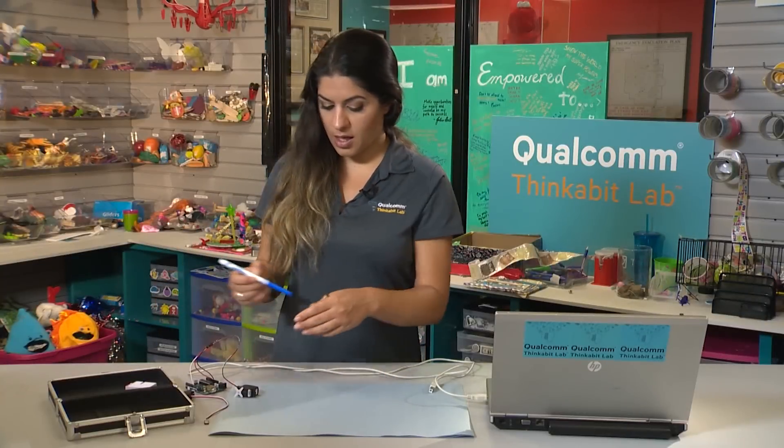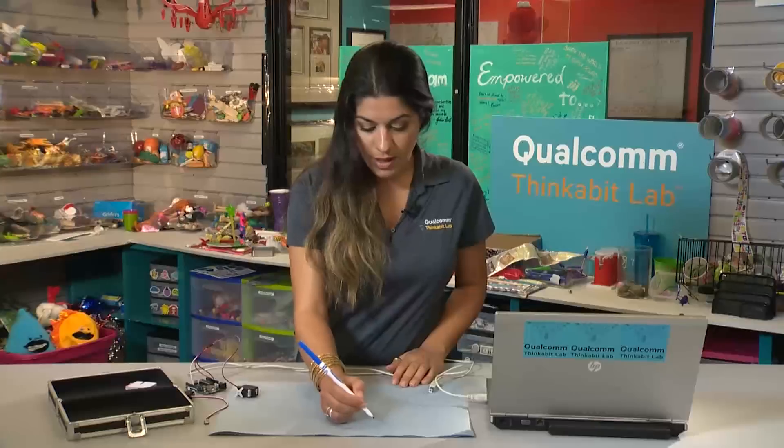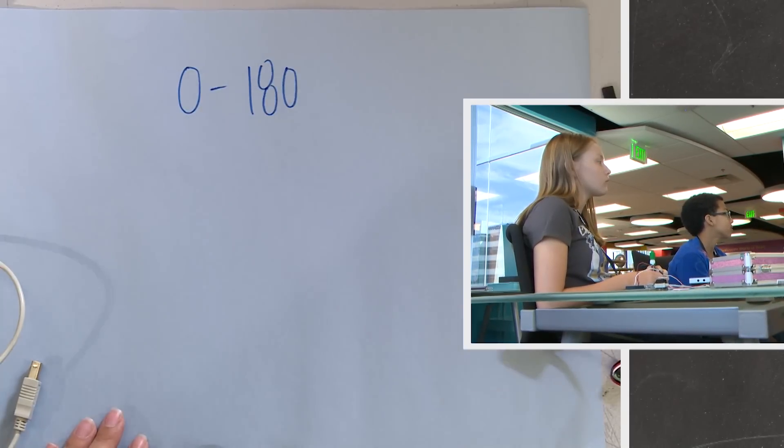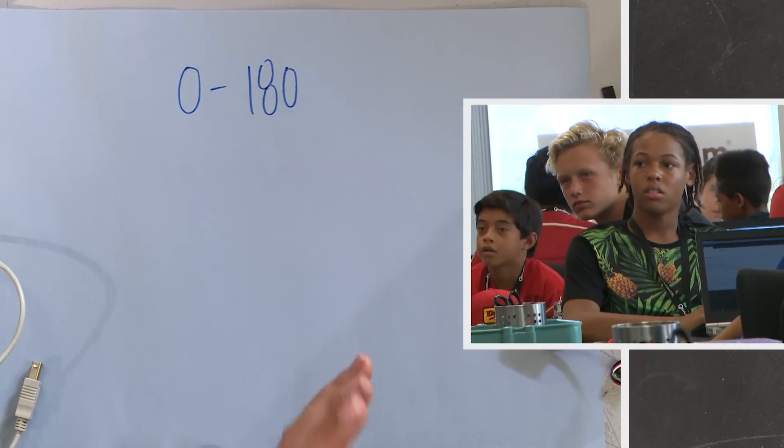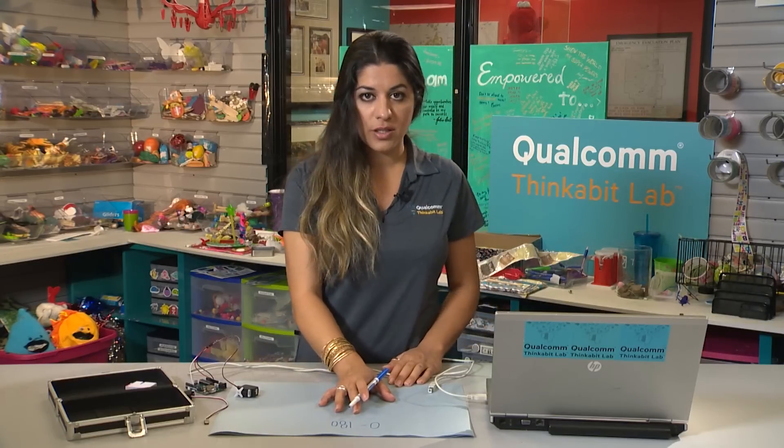Just so that you're aware, the values you can use for both servos, according to this library, is 0 to 180. Those are the only values you can use for myServo.write in that parentheses. For a big servo, the full rotation continuous servo, we're going to use a number line.